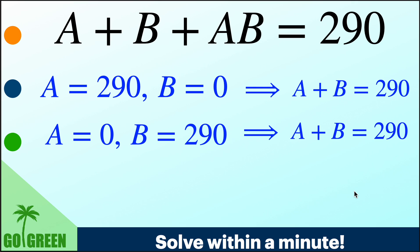That in any of the cases A plus B is going to be 290. First of all, this is a wrong answer. Secondly, this equation A plus B plus AB equal to 290 has infinitely many solutions.